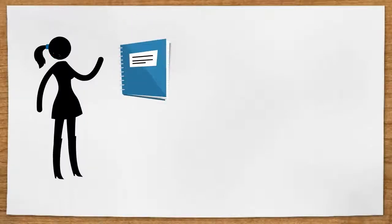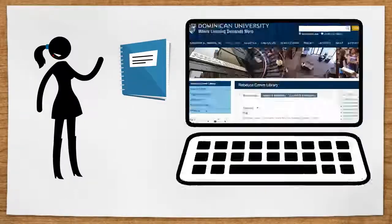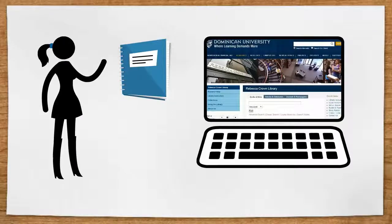You can find peer review articles in academic journals available from the library's databases and also in some scholarly books.